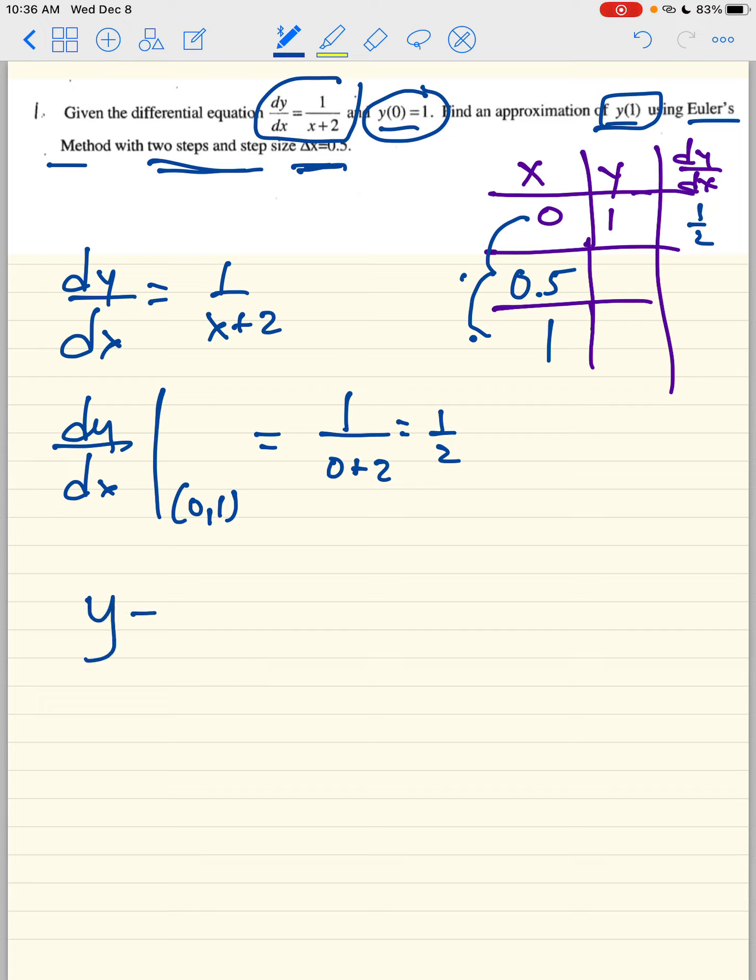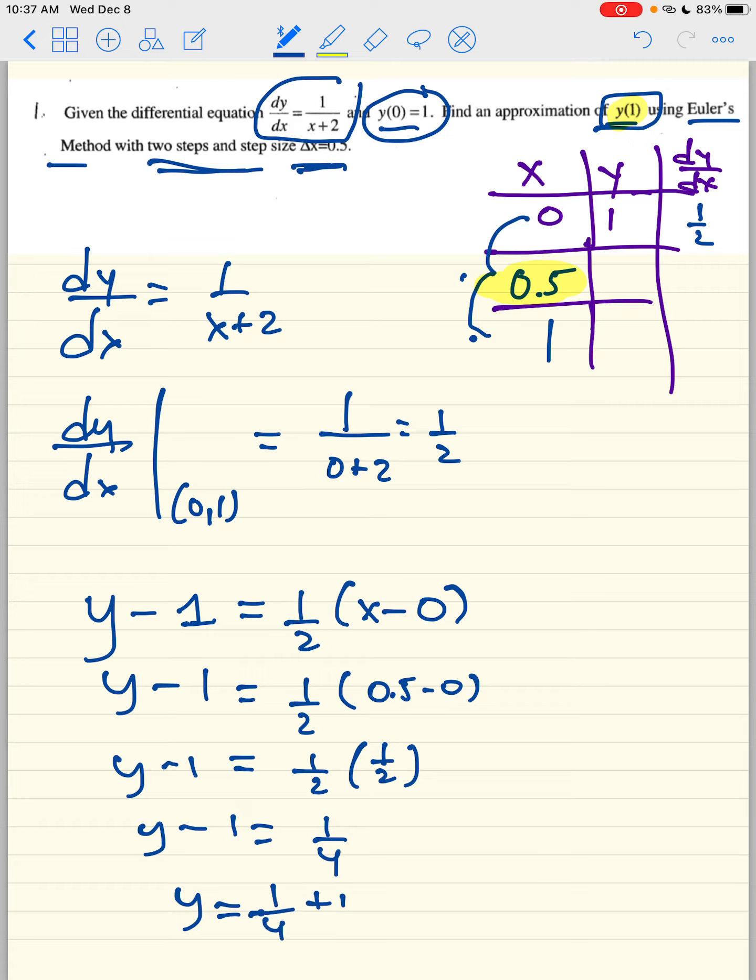I'm going to write the equation of the tangent line, y minus your y point equals m times x minus your x point. What you're going to do is find an approximation for 0.5. You're not allowed to find the approximation for 1 just yet. So you're going to get close to 1, but you're not going to use 1. So you just got to plug in 0.5. So 1 half times 0.5 minus 0. So 1 half, 0.5 is 1 half also. So we have 1 fourth. And when you add 1 to 1 fourth, you get 5 fourths. So this is going to be 5 fourths.